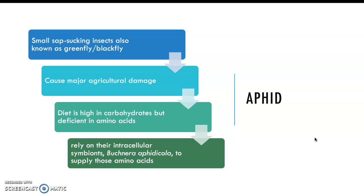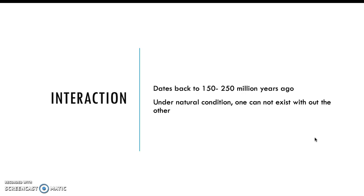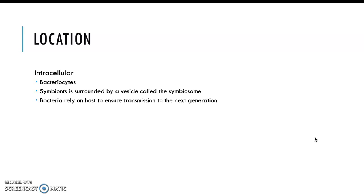The aphid relies on the intracellular symbiont Buchnera to supply it with essential amino acids. Their interaction has been dated back 150 to 200 million years ago, and under natural conditions one cannot exist without the other — they've become so dependent that one cannot live if the other is not present. Buchnera is located intracellularly in a bacteriocyte, which is a modified lipid cell the aphid has evolved over time, and the symbiont is surrounded by a vesicle called the symbiosome. This bacterium will rely on the host to ensure transmission to the next generation, from mother to offspring.